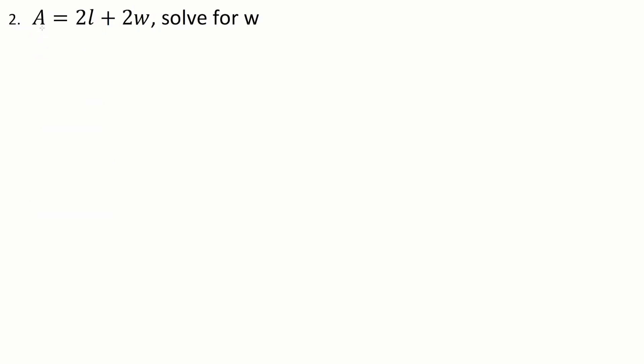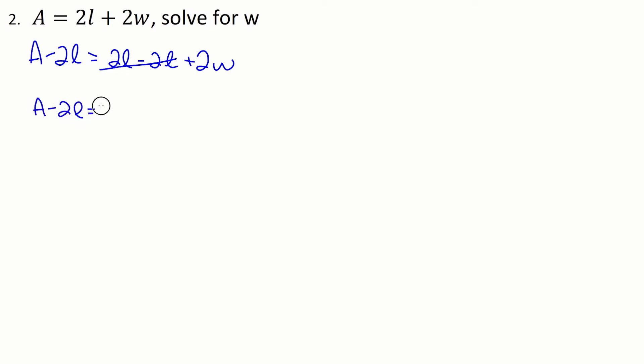Now we have, I think, an area formula. Area is equal to 2L plus 2W, and we're solving for W. We have a couple of operations on the W here. One right next to it is a multiplication by 2, and the other one is an addition by 2L. So remember we're going in the opposite order, so we're going to start by getting rid of the 2L. I'm going to have a minus 2L occur on both sides, and we have our cancellation there. So we have A minus 2L is equal to 2W.